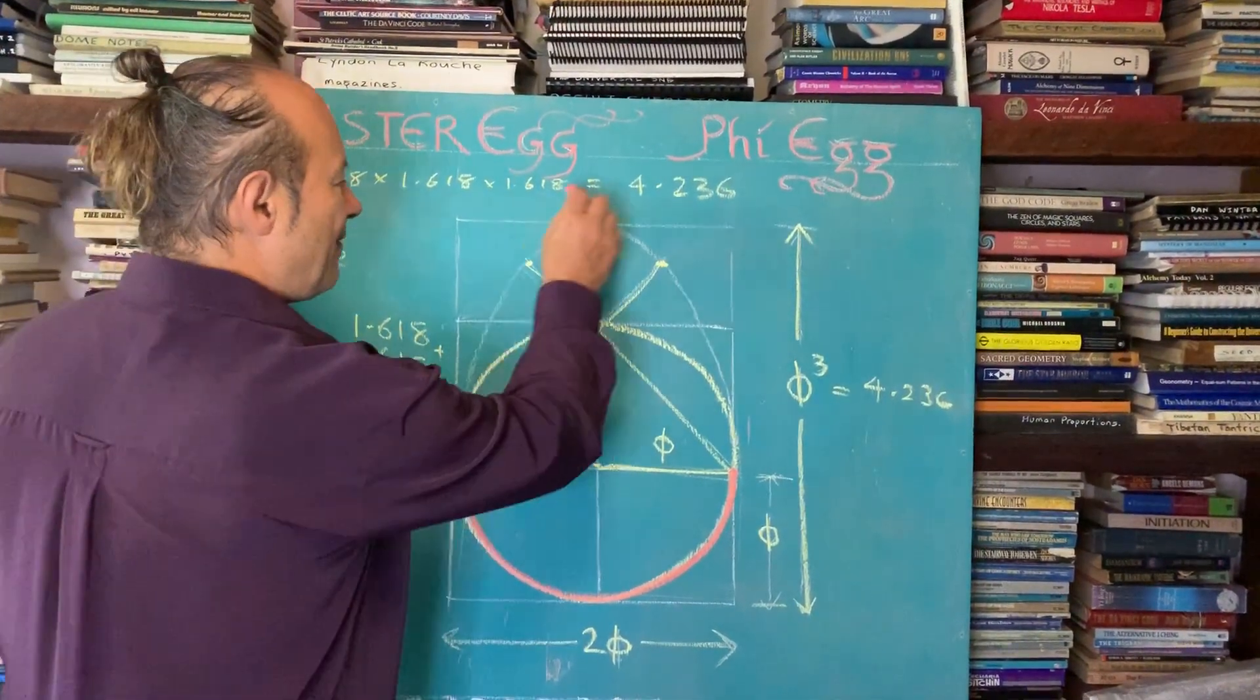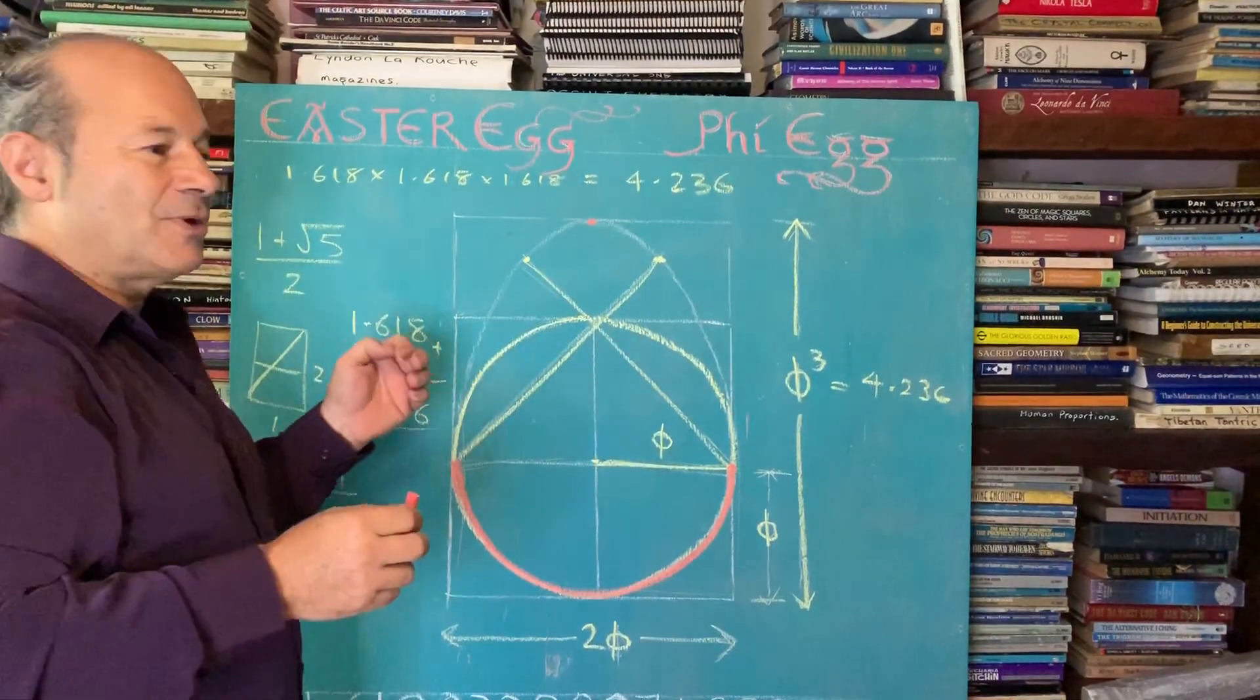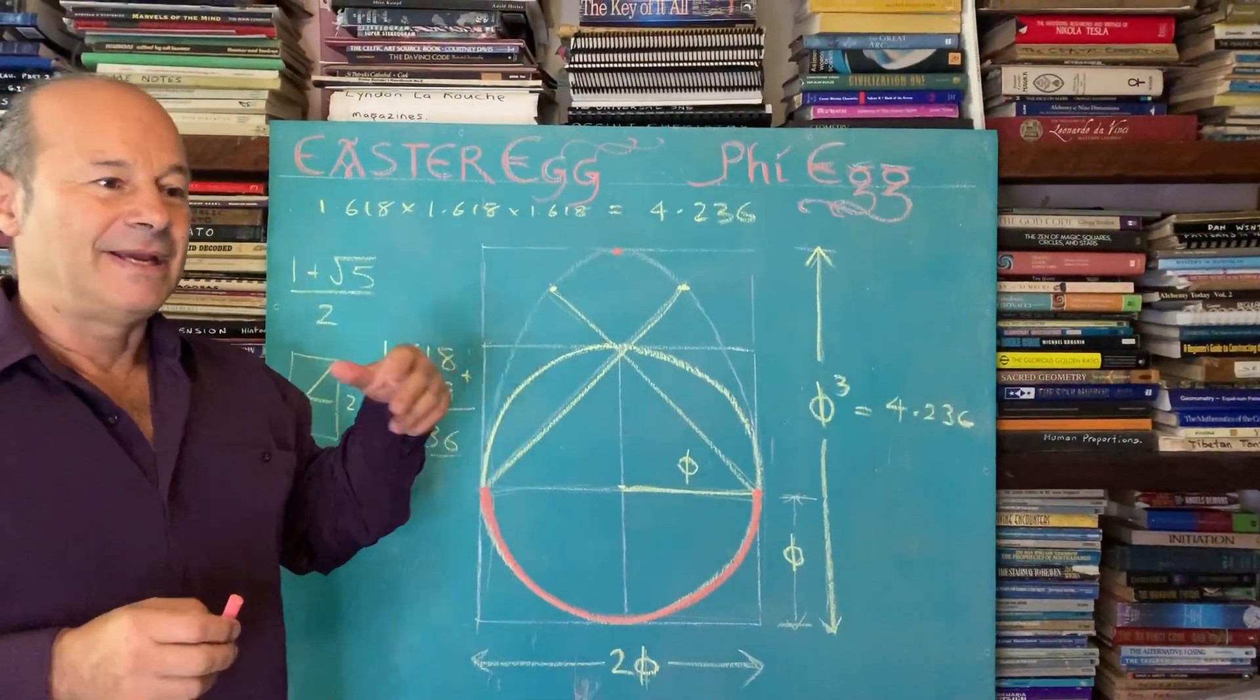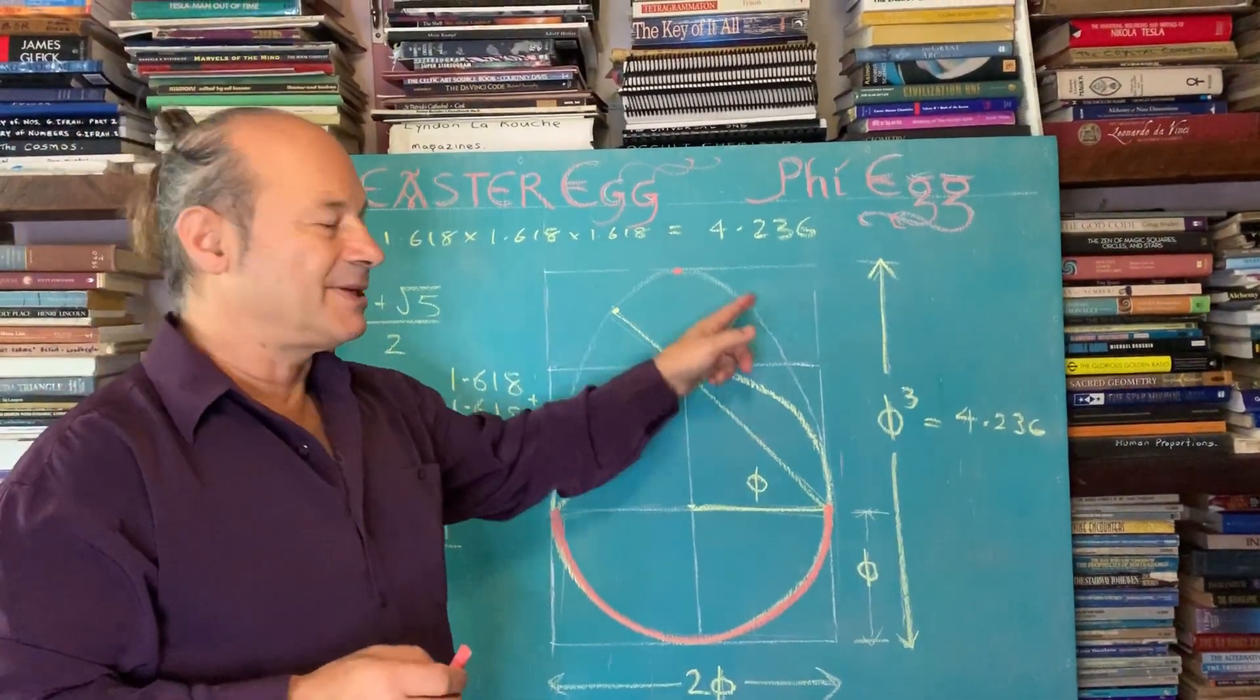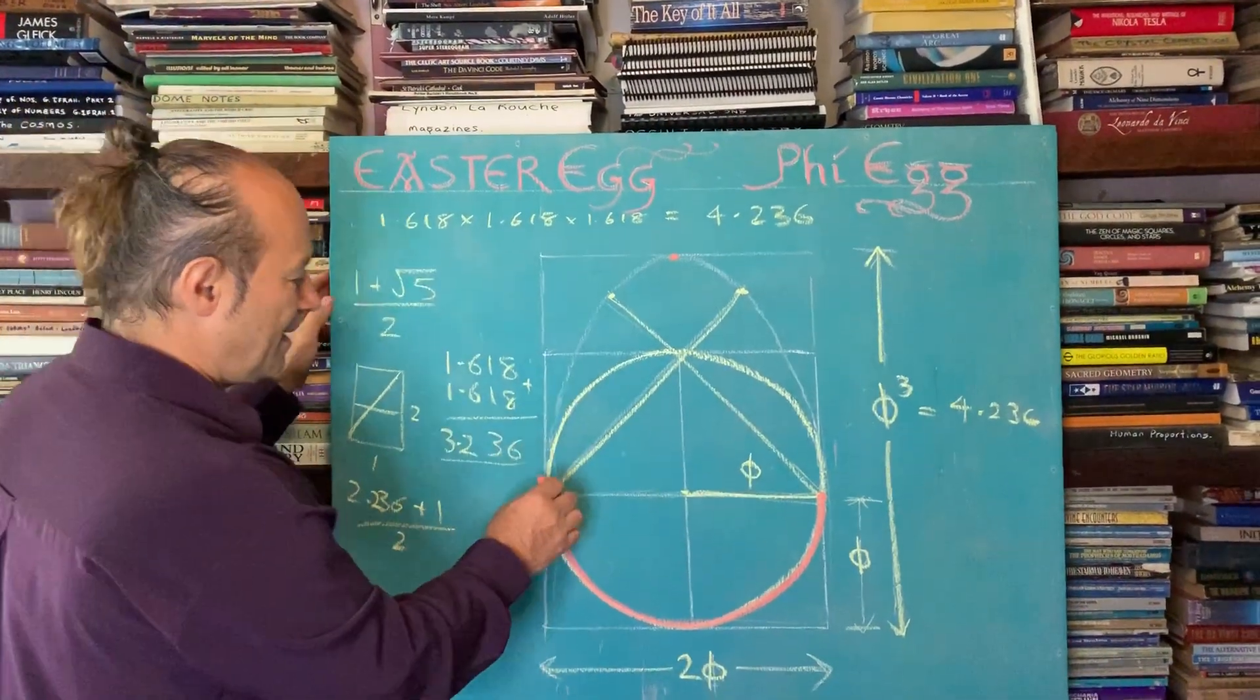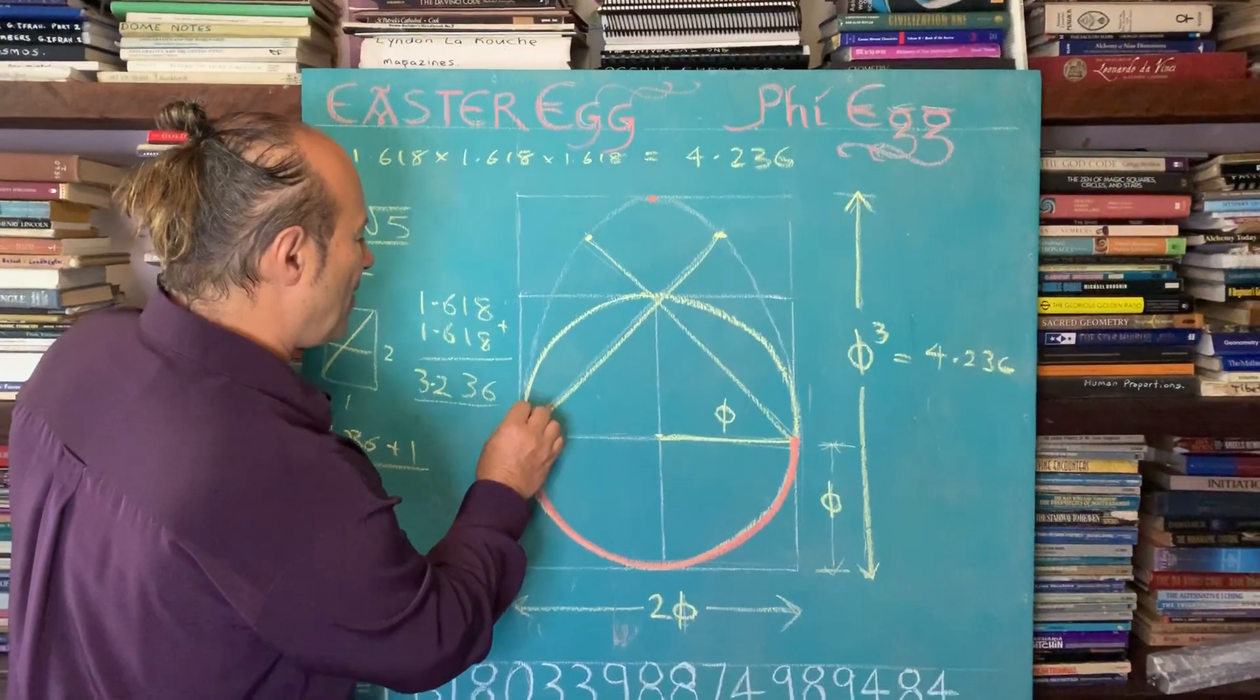And then from here, we have an inverted parabola. Parabola is a mathematical equation, y equals x squared. We can actually plot this perfectly, y equals x squared. And it's got to do with how light is reflected.